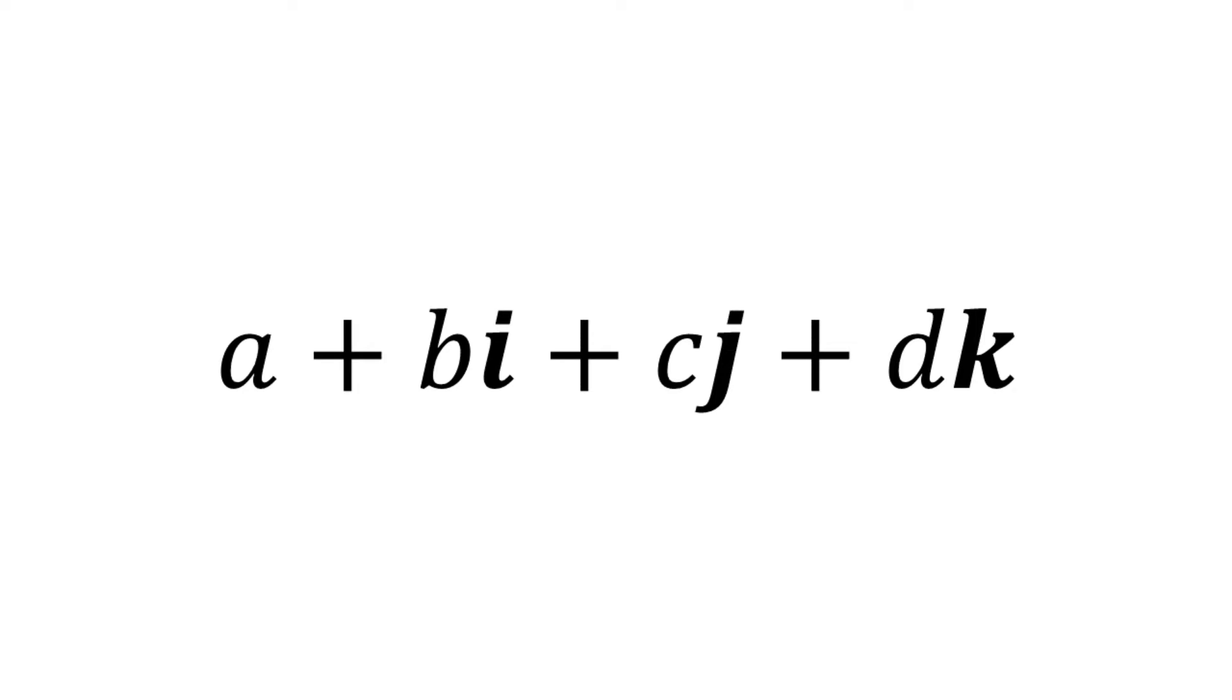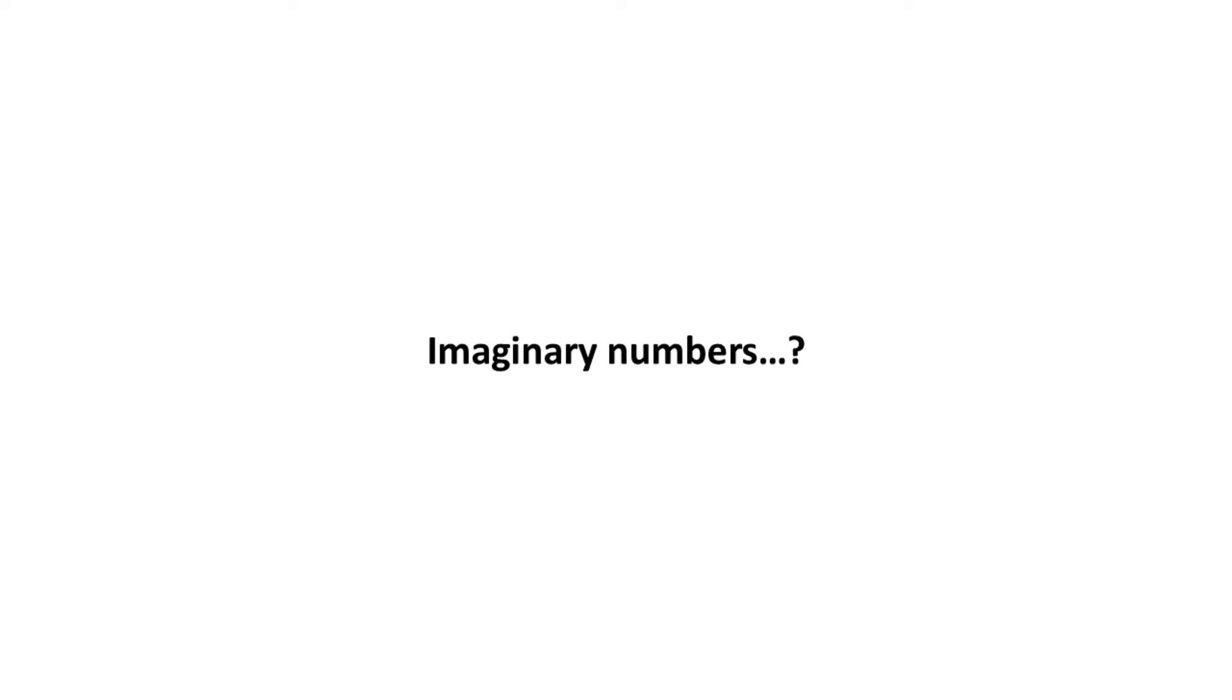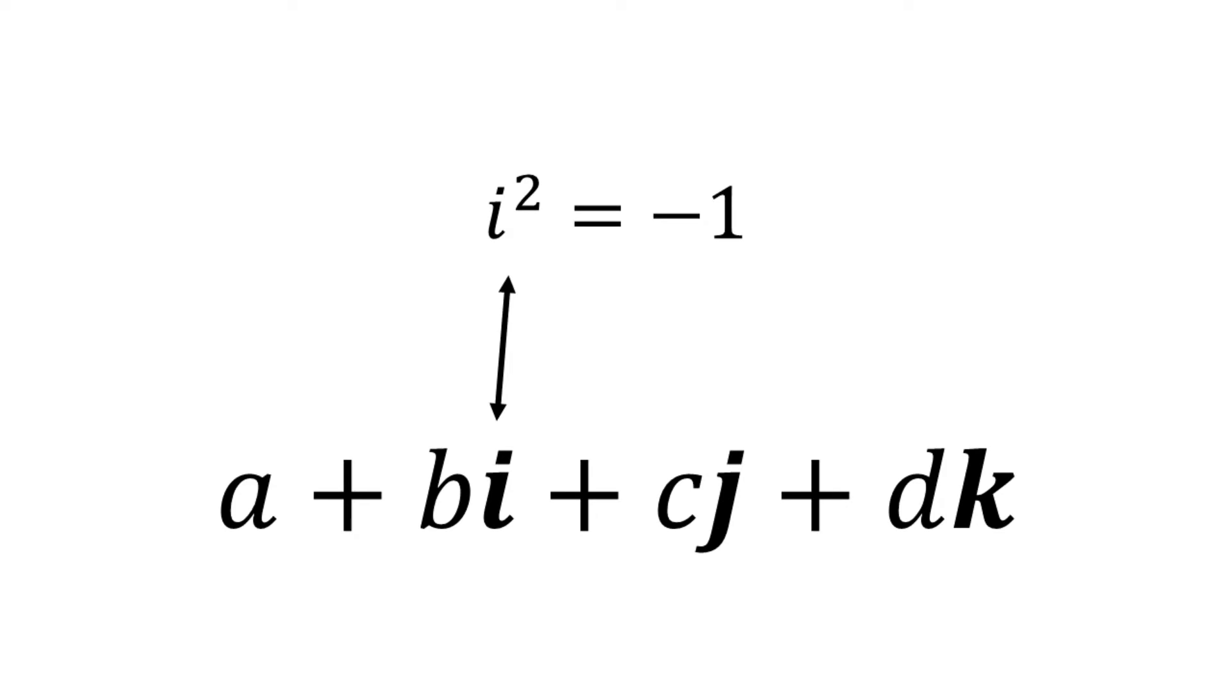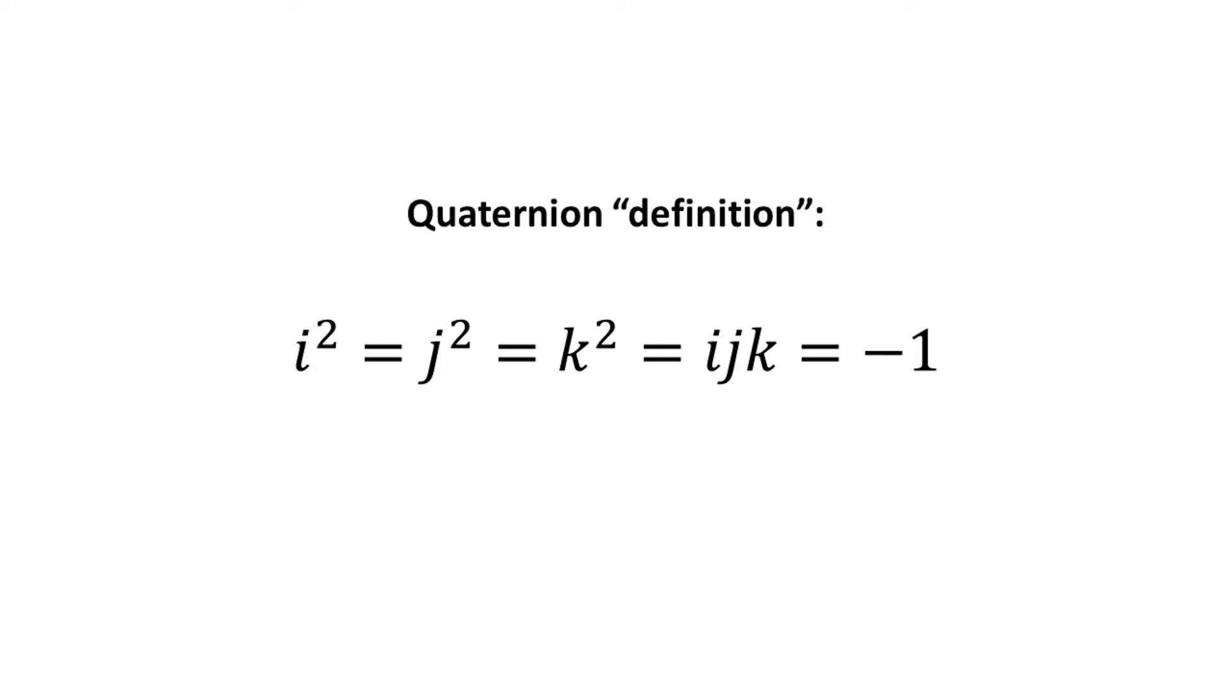The trick with quaternions is that these i's, j's, and k's are actually complex numbers. You know the idea that the square root of negative 1 is i? Yeah, these are the same i's. In fact, all three follow the same sort of definition. All three of them are the square root of negative 1. And if you multiply all three together, you also get negative 1. Yeah, it's pretty weird, I agree.